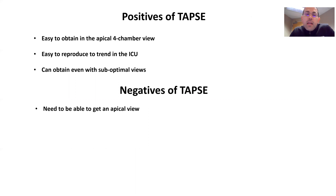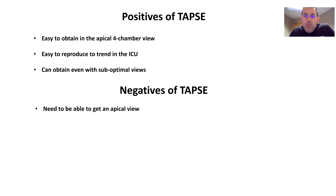Now, some of the negatives of TAPSE — there aren't too many. You don't even really need to have a great apical four-chamber view to get this; you just need to have the tricuspid annulus in plane. However, not everyone can provide an apical four-chamber view. In some people, you can only get a subcostal view, and in those particular individuals, you wouldn't be able to use this.